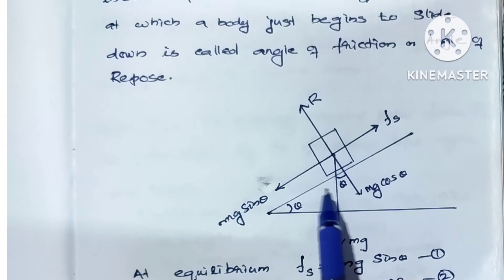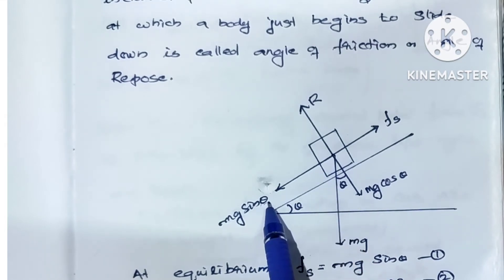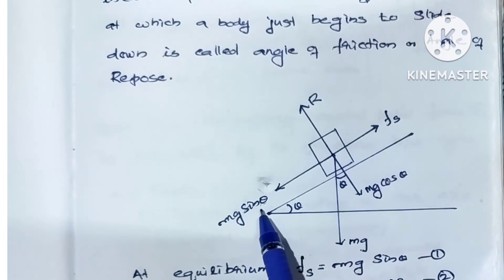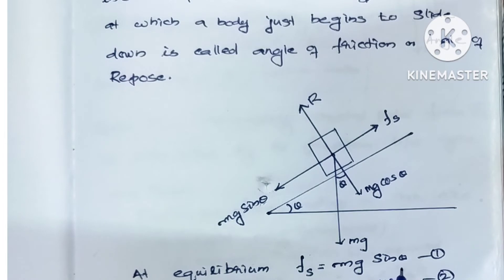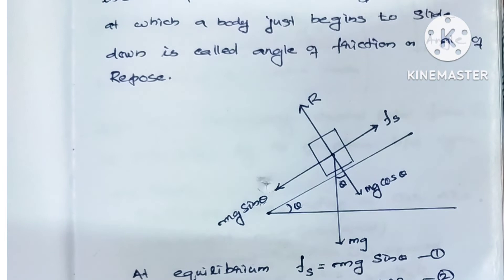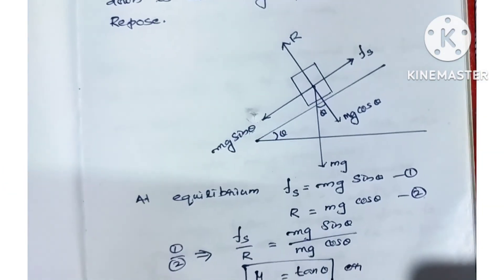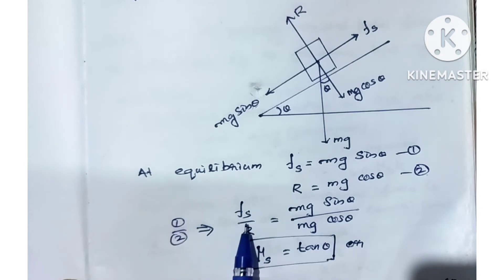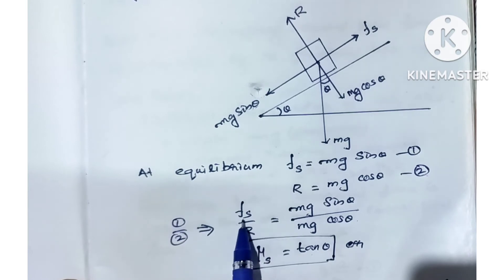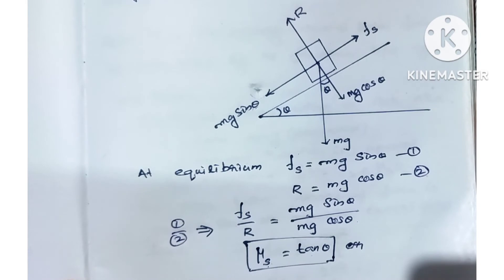The component is Mg cos theta, and the other component is Mg sin theta. In the balanced position, Fs is equal to Mg sin theta — that is equation 1. The reaction R is equal to Mg cos theta — that is equation 2. Dividing equation 1 by 2: Fs by R equals Mg sin theta over Mg cos theta, which equals sin theta over cos theta. This gives the coefficient of static friction.